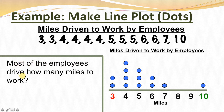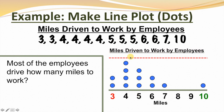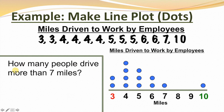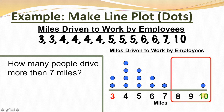Most of the employees drive how many miles to work? Which value has the most dots? Definitely not ten — that's only one dot, meaning only one employee. Looking for the value with the most dots — that would be four. That's how many miles most employees drove. How many people drive more than seven miles? Here's seven miles, but we're looking for more than seven — all the miles more than seven. Only one employee drives more than seven miles.